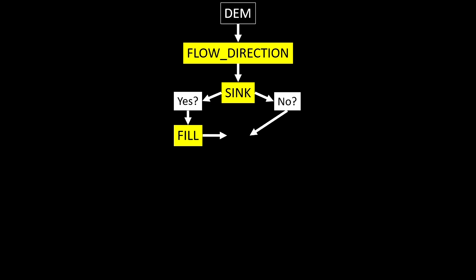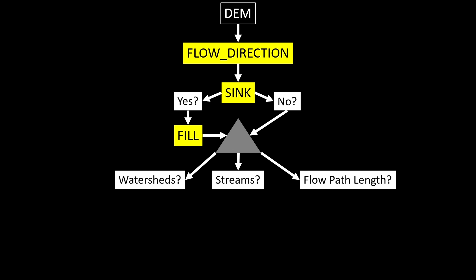After we run the fill, we then have what's called the hydrologically correct DEM — or a depressionless DEM, as it's known in the GIS world. Once we have a hydrologically correct DEM, we can run several different operations depending on our objective: delineating watersheds or drawing and identifying the location of streams. We couldn't do these things without our hydrologically correct DEM.